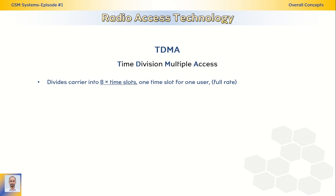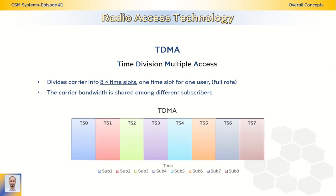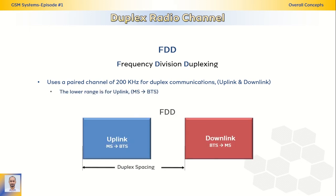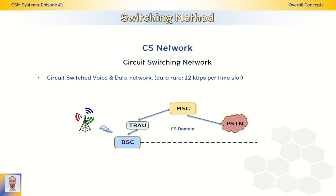GSM depends on TDMA as radio access technology — Time Division Multiple Access — by dividing the carrier into eight time slots and assigning one time slot for one user in the full rate, so that the carrier bandwidth is shared among different subscribers at the same time. GSM depends on Frequency Division Duplexing for duplex communication, providing per channel 200 kHz for uplink and downlink. The GSM network depends mainly on circuit switching as a switching method between components, with a data rate of 12 kilobits per second per time slot.